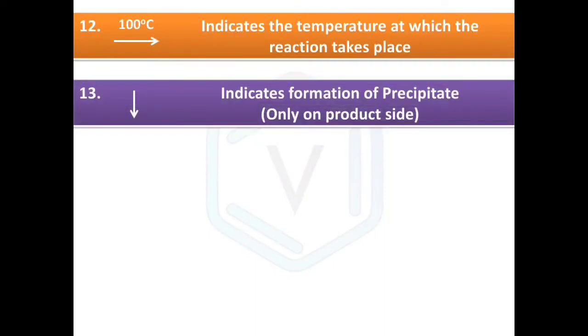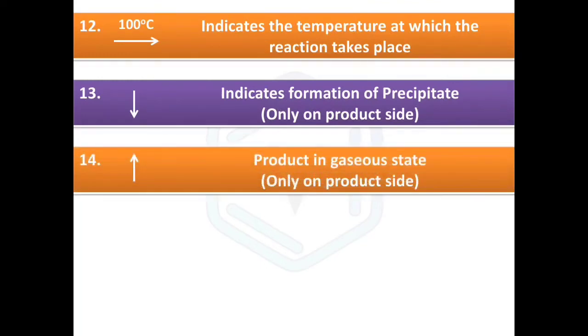The downward arrow indicates the formation of precipitate on the product side. The upward arrow indicates the product in gaseous state.